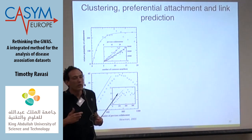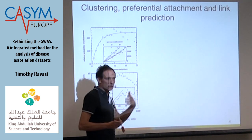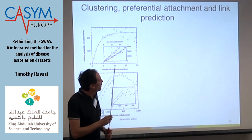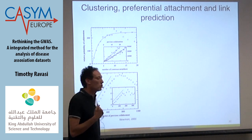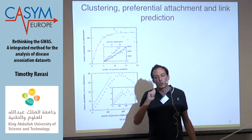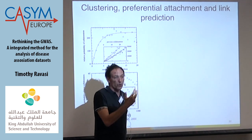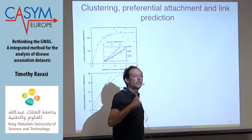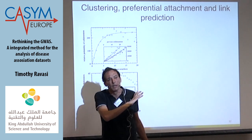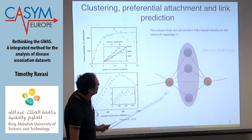If you have a lot of friends in common with someone, it is most likely you'll become friends too — that's the concept. That is another proof of preferential attachment, but also it tells us that the inherent topological structure of the network — scale-free, small-world, clustering coefficient — can be used to predict interactions, not only analyze them.